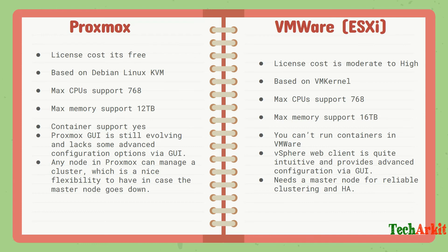Proxmox uses port 8006 for its web console, whereas VMware uses the default web port 443, which supports SSL certification. So Proxmox requires a different port number when accessing the web console.